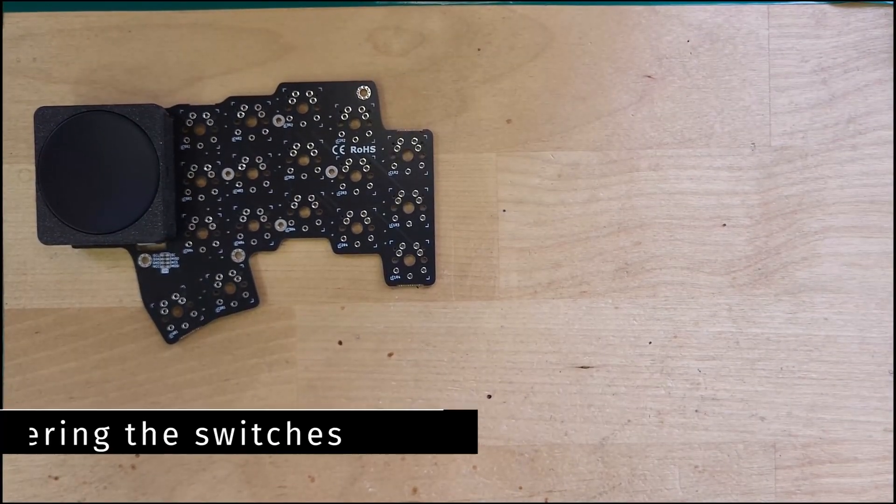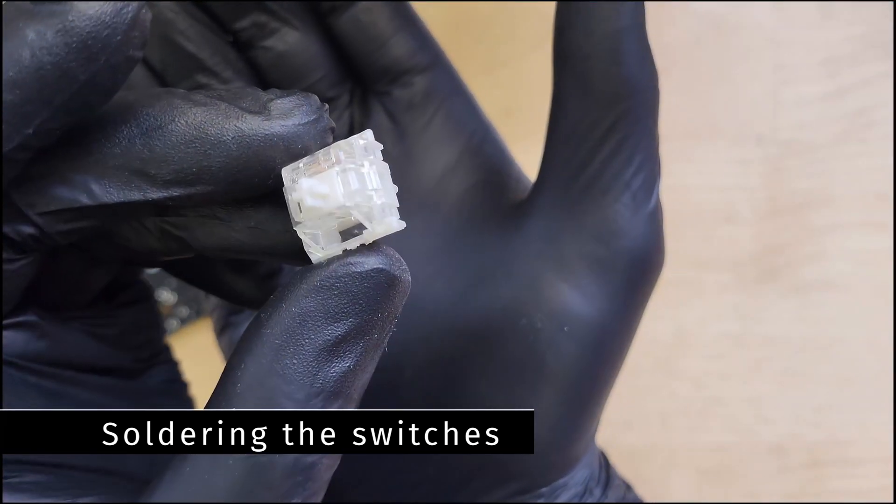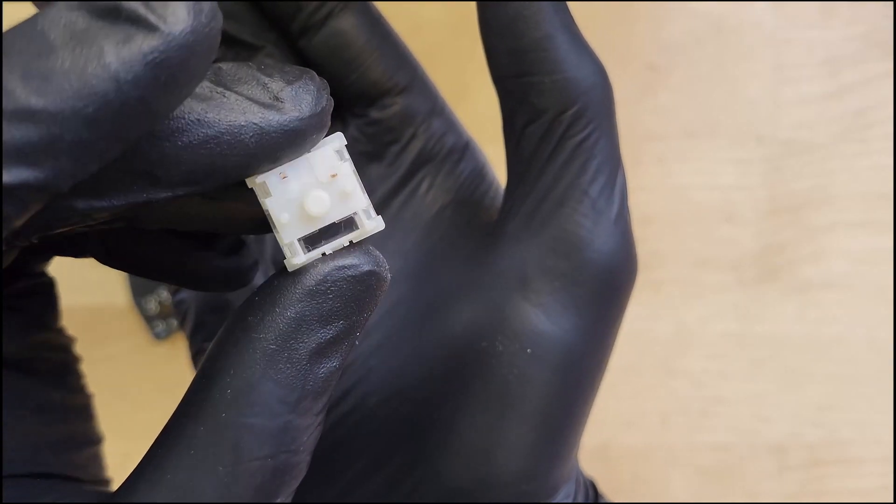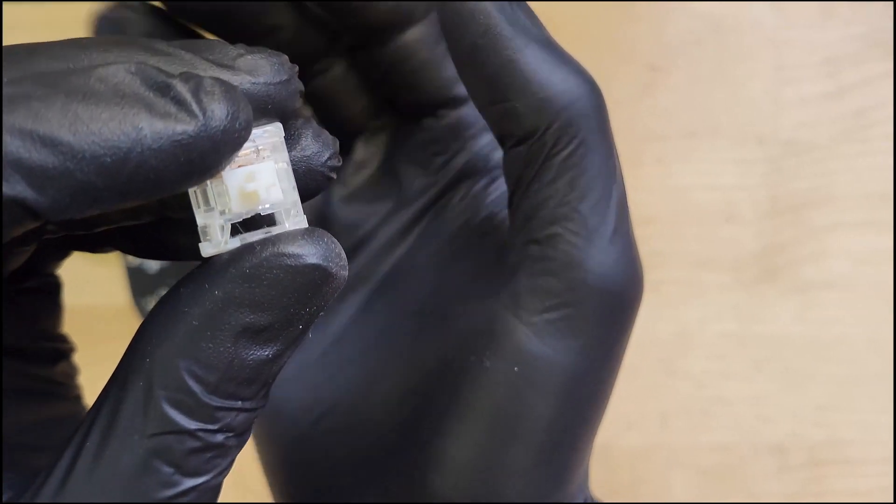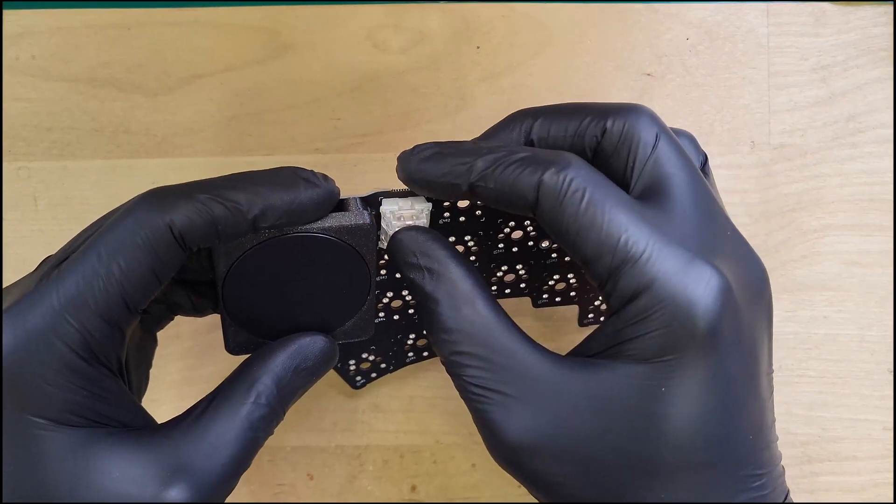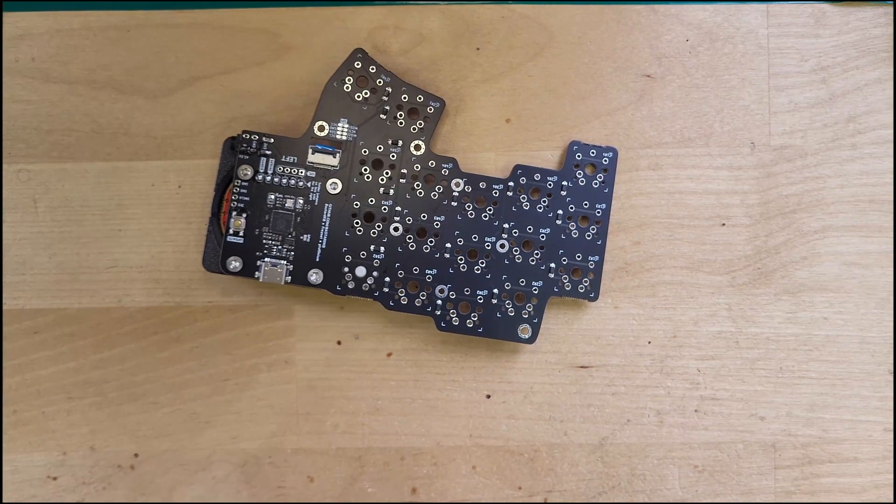For this build, we are using Boba U4 62 gram silent switches. The Dilemma is compatible with all MX-style switches and Choc low-profile Kailh switches. Installation is pretty straightforward here. Just drop the switches in and solder the two pins. Do this for both sides of the keyboard.